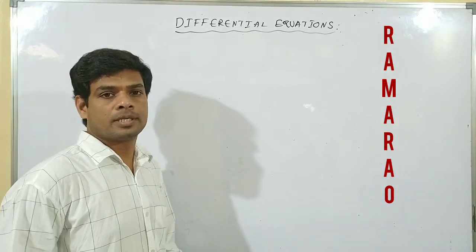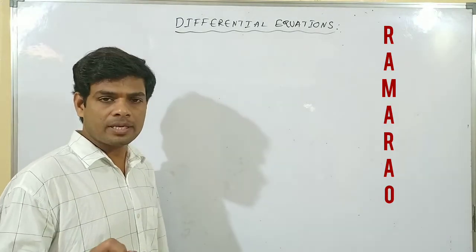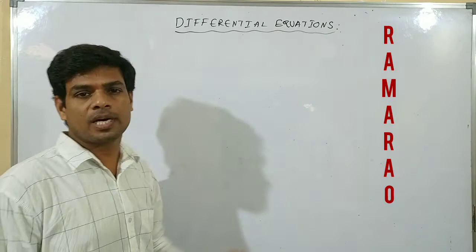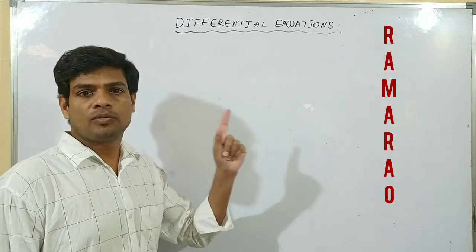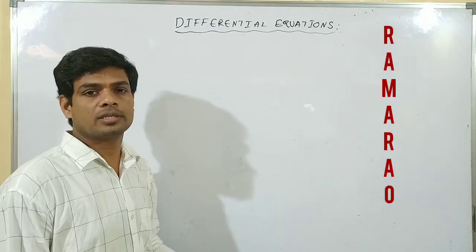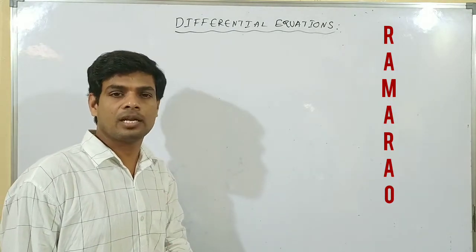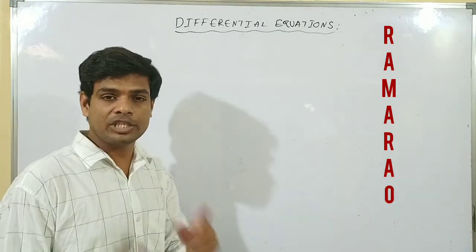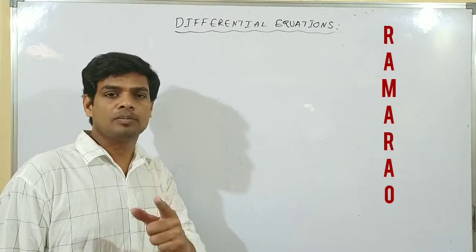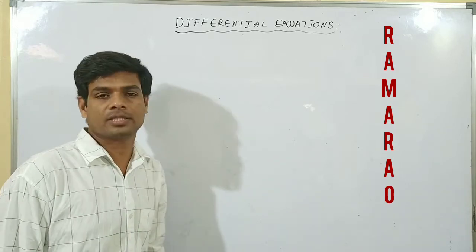Hi, hello everyone. Today I am discussing second year 2B maths. Chapter name is Differential Equations. In this chapter, 4 marks questions, 2 marks questions, and 7 marks questions will come in the examination. Please listen everyone and also subscribe my channel and like and share with everyone. Very useful for intermediate IPE purpose examination. I will make more videos for everyone.